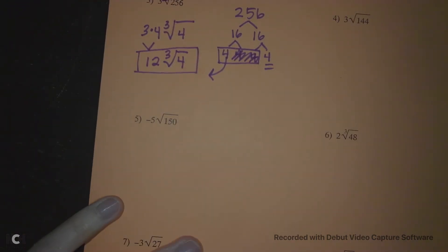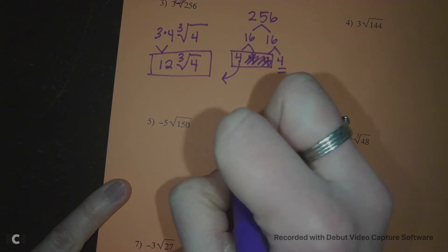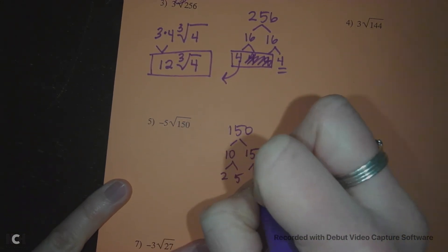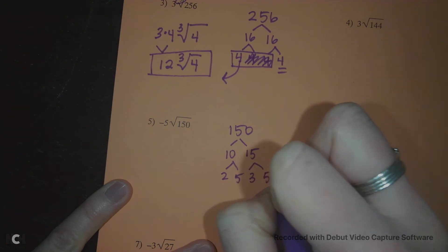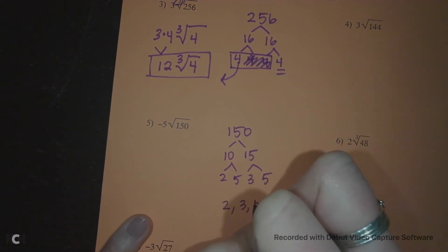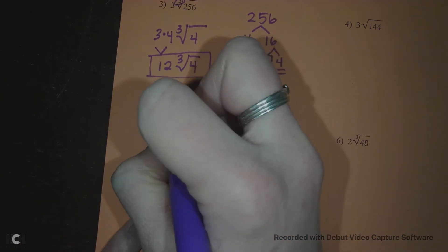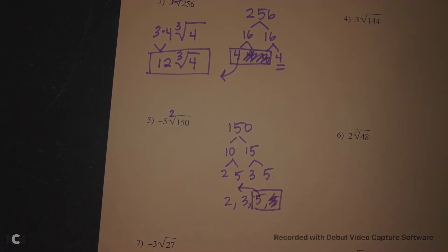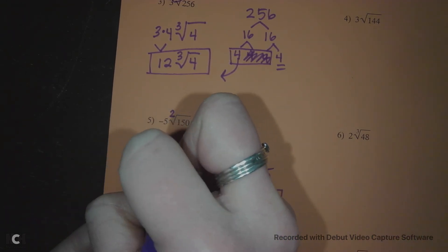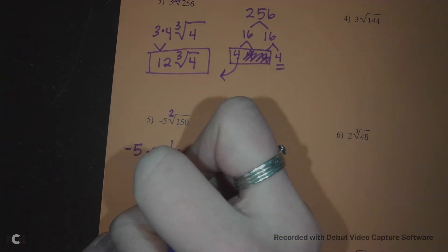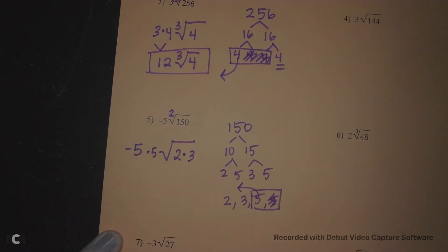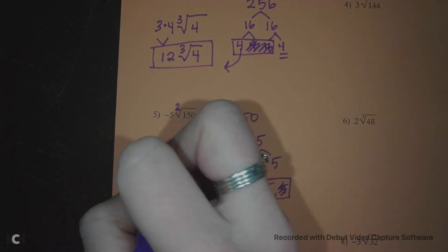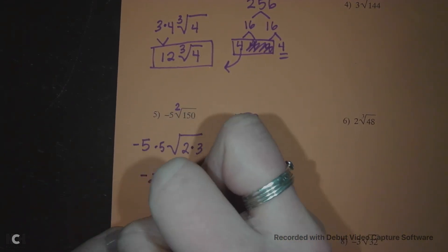Okay, again, number five, 150. So 150 is 10 and 15, and 10 is 2 and 5, and 15 is 3 and 5. So I've got 2, 3, 5, and 5. I'm looking for pairs because there's no number on my shelf, so it has to be a 2. I have a pair of 5s, one 5 goes out, the others go away. Okay, so I already have a negative 5 out here, so I'm gonna put him down and multiply him by my five that escaped. It's a square root, so I don't need a number on my shelf, and I have a 2 and a 3 leftover, so remember we're multiplying our leftover pieces. Negative 5 times 5 is negative 25, and 2 times 3 is 6.